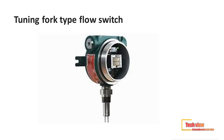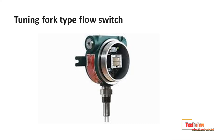The next type is the tuning fork flow switch. The vibrating fork type working principle is simple and effective. These flow switches are reliable, cost-effective, and very popular for use in detecting the presence or absence of liquids and bulk solid materials. The working principle is based upon detecting the change in harmonic vibration frequency of the sensing element as a result of the presence of the target media.